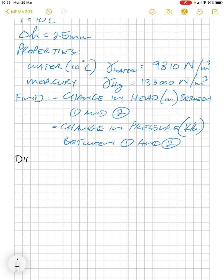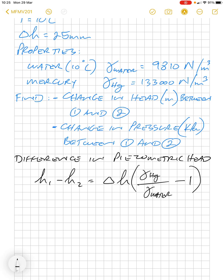So the difference in piezometric head, that's just a term indicating all the heads together so that's including pressure and height. So that's h1 minus h2 and delta h which is your change in height in the manometer. And here we've got gamma hg over gamma water minus one and that's the piezometric head equation, a difference in head at a point.